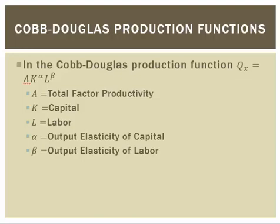A is going to be total factor productivity. That's a measure of productivity, of technology, stuff like that. K and L are going to be some measures of capital and labor: might be the number of workers for L, K might be the value of capital, something like that. And then alpha and beta are going to be the output elasticities of capital and labor.